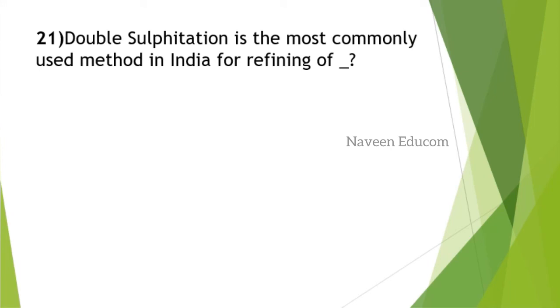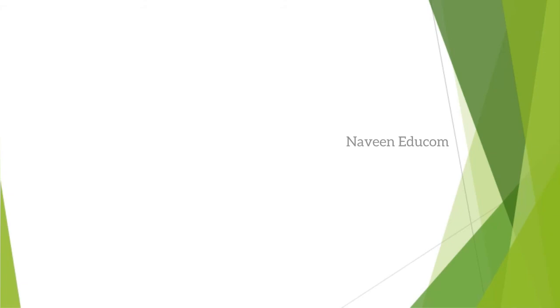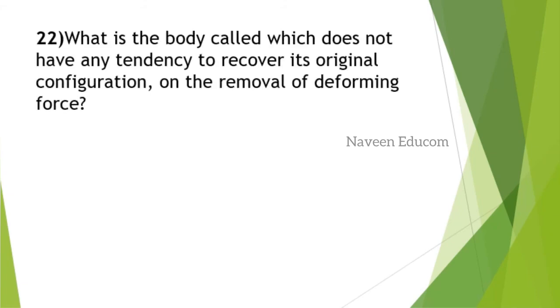Double sulfitation is the most commonly used method in India for refining of what? The answer is option C, sugar. In India, double sulfitation is the most commonly used method for refining of sugar. Also, it is the cheapest process of refining sugar as compared to other available processes.